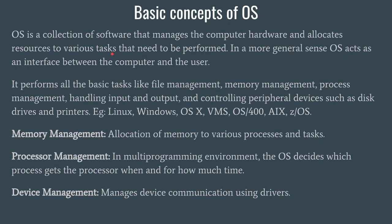For example, suppose you want to print a PDF file or a document file. In order to print that file, you need a printer. All you need to do is press Ctrl+P, select OK, and the file gets printed. So how does the computer know to use the printer? That knowledge is given to the computer by the OS. In a more general sense, the OS actually acts as an interface between the computer and the user.